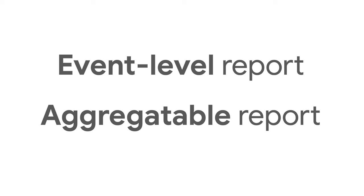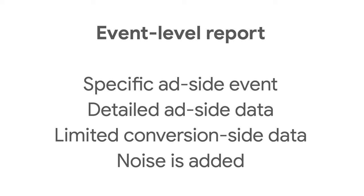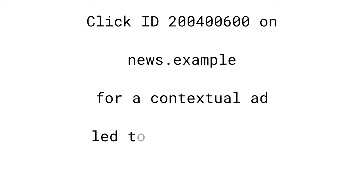Ads can be configured to enable two types of report: event-level reports and aggregatable reports. Event-level reports have more detailed ad-side data, such as the creative ID for an ad or geographical information, and they associate a specific ad click or view event with a conversion. To help preserve user privacy, the conversion-side data is very limited, and some random data called noise is added. Event-level reports are useful for learning how to improve return on investment — in particular, these reports can be used to optimize ad placement.